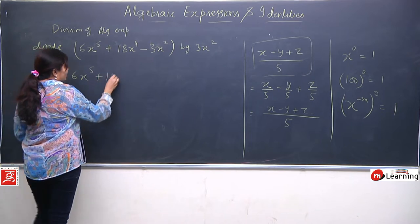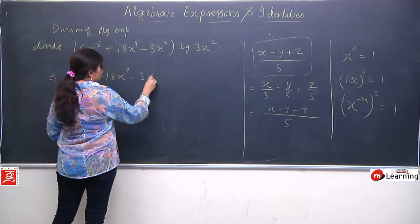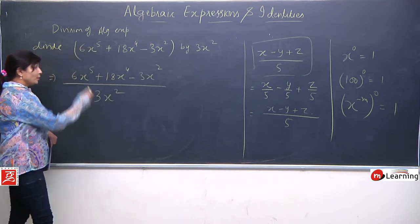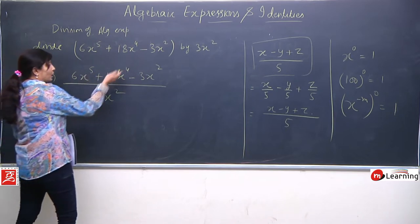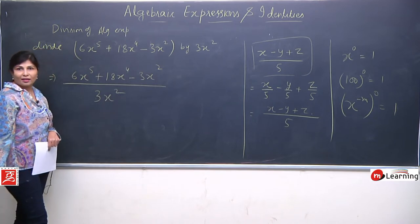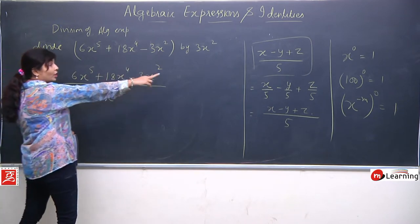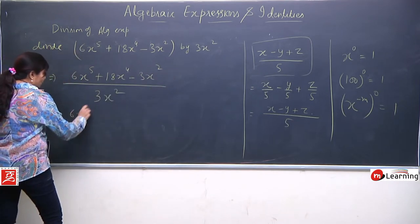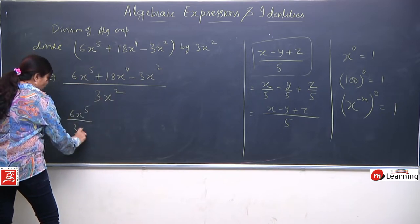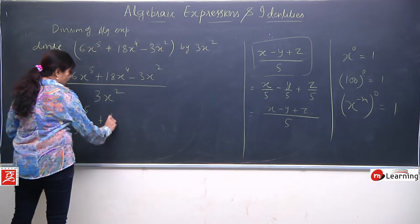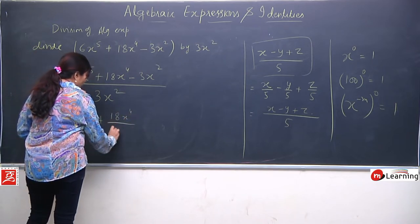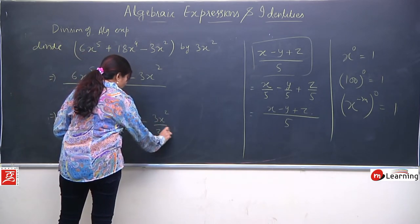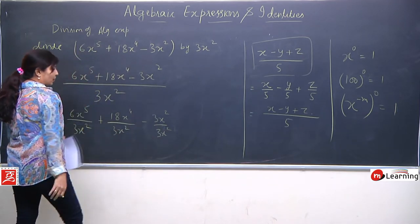Ab dekhiye: 6x to the power 5 plus 18x to the power 4 minus 3x square, divided by 3x square. Yahan hum kaise divide karein? Yeh alag term hai, yeh alag hai, inke beech mein operation alag hai, to hum directly solve nahi kar sakte. To again hum separation method apply karenge: 6x⁵ upon 3x², plus 18x⁴ upon 3x², minus 3x² upon 3x². Aisa aap likh sakte hain easily.